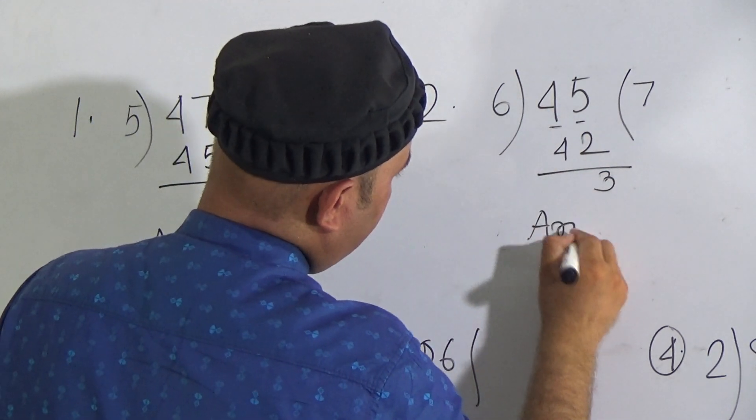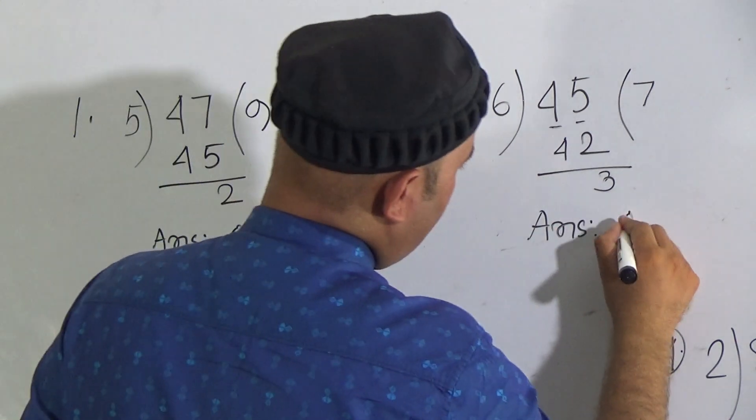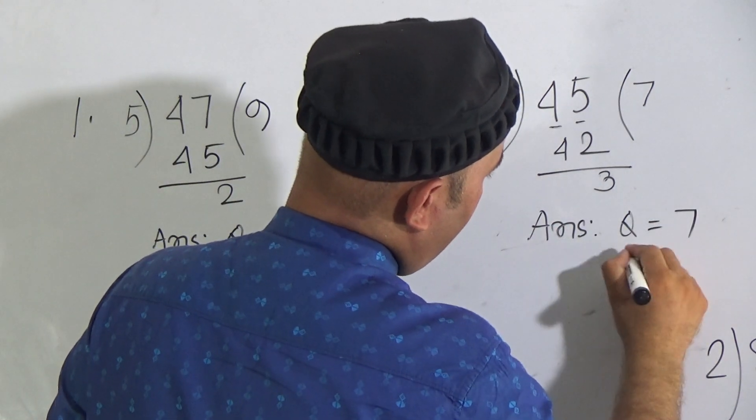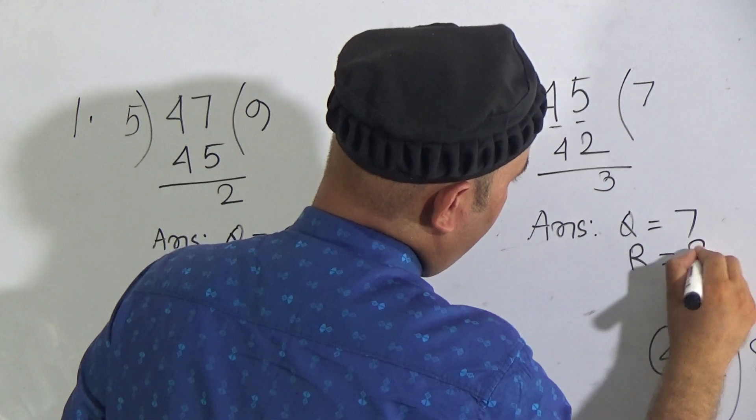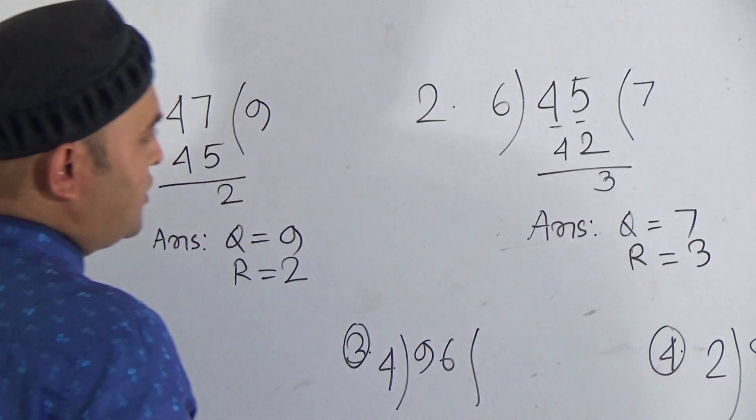Now subtract 42 from 45. 2 from 5 it will be 3. There is no carry. So the answer is quotient 7 and remainder 3. My dear students, hope you understood this one.